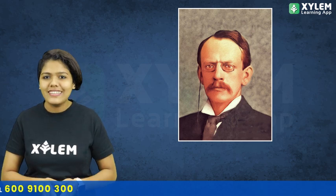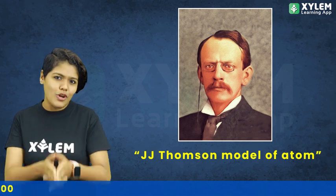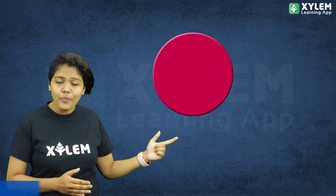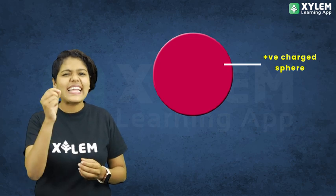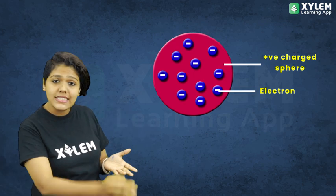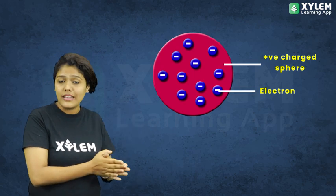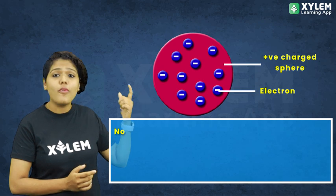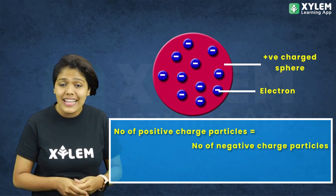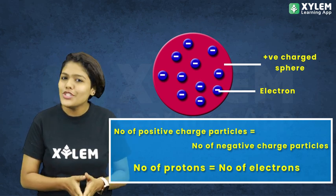So first let's see the model — it is the J.J. Thomson model of atom. It is a very simple model. According to J.J. Thomson, the atom consists of a positively charged sphere made up of protons, and the negatively charged electrons are embedded in it. The positive sphere has negative electrons distributed in it. He also says that the number of positively charged particles are equal to the number of negatively charged particles — that means the number of protons equals the number of electrons. Therefore, the atom as a whole is neutral.